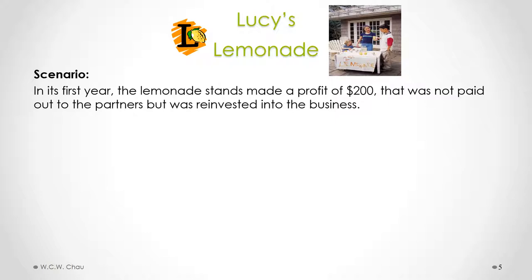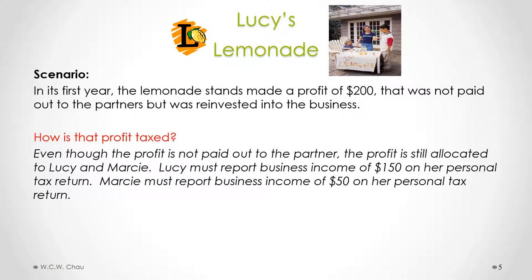Lucy's Lemonade in its first year made a profit of $200, and that profit was not paid out to the partners but was reinvested into the business. Even though the profit is not paid out, it is still allocated to Lucy and Marcy. Lucy must report business income of $150 on her personal income tax return, and Marcy must report $50 of business income on her personal tax return.